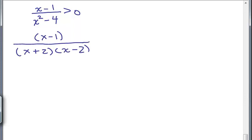So I have (x - 1) over (x + 2)(x - 2) greater than 0. Now, our critical points come from the factors of the numerator and the denominator.